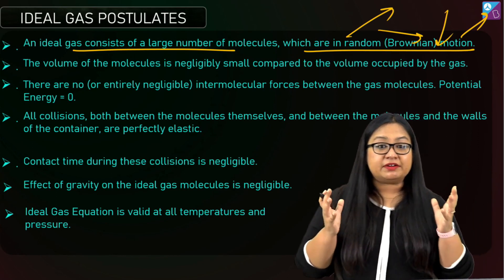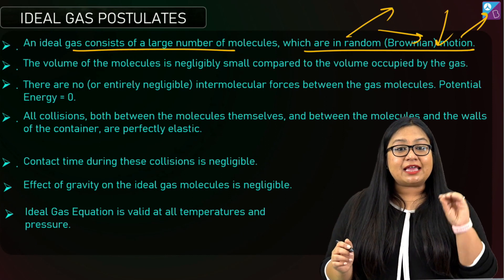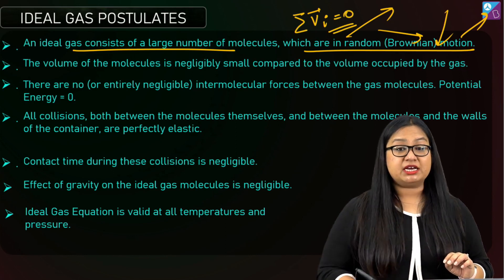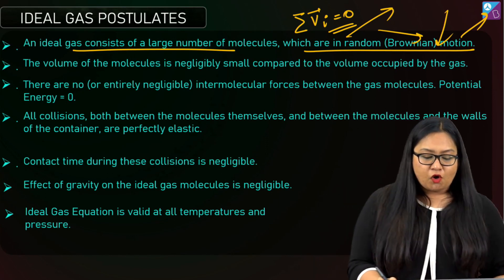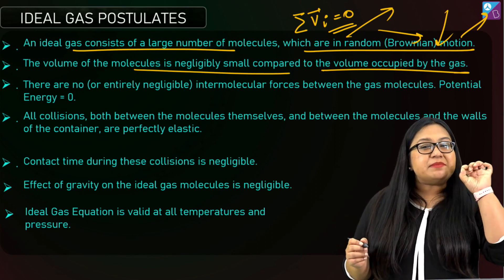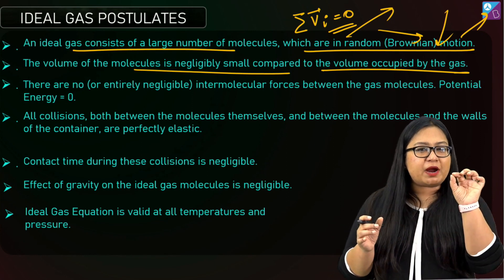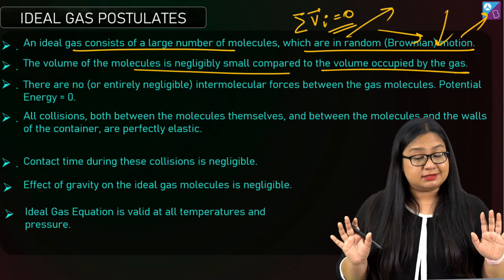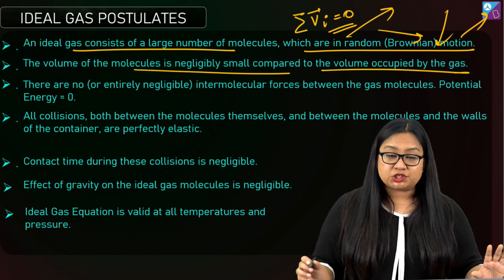Second postulate: the volume of the molecules is negligibly small compared to the volume occupied by the gas. Molecules themselves are very, very small, so the volume occupied by the molecules themselves is negligible inside the container. We assume all molecules as point masses. Third postulate: there are entirely negligible intermolecular forces between the gas molecules. Compared to liquids and solids, these forces are much smaller and for an ideal gas we can completely neglect them.